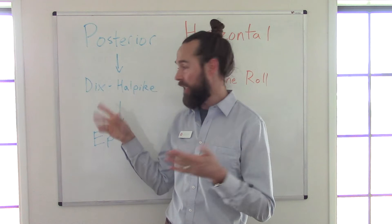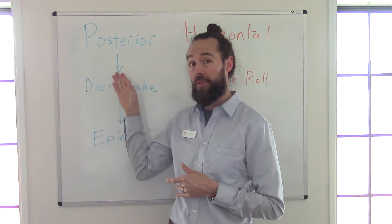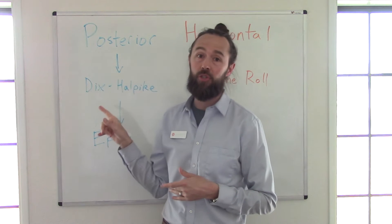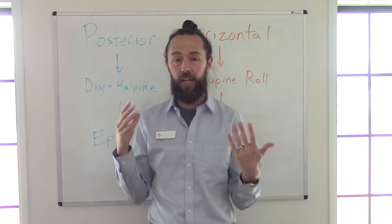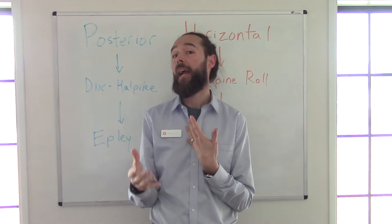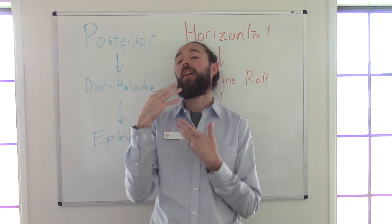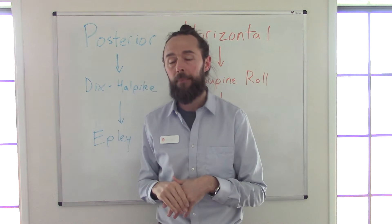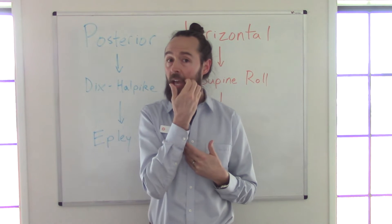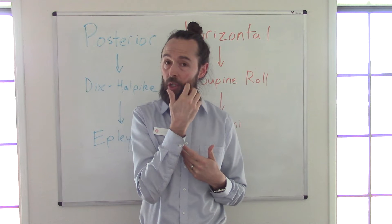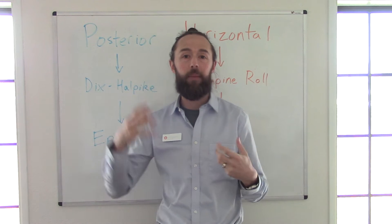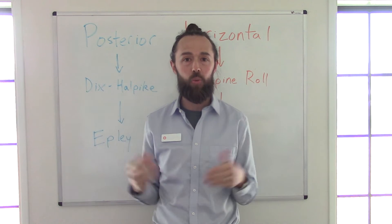The Dix-Hallpike test: in a nutshell, you're sitting up on the table, your head is turned 45 degrees to one side, tipped back, and then you lay back in that position, ending up with your head hanging backwards a little bit. So if you turn your head to the right, you're testing the right posterior canal. A positive sign on that test would be the client reporting sensations of vertigo like movement, spinning, or swaying.